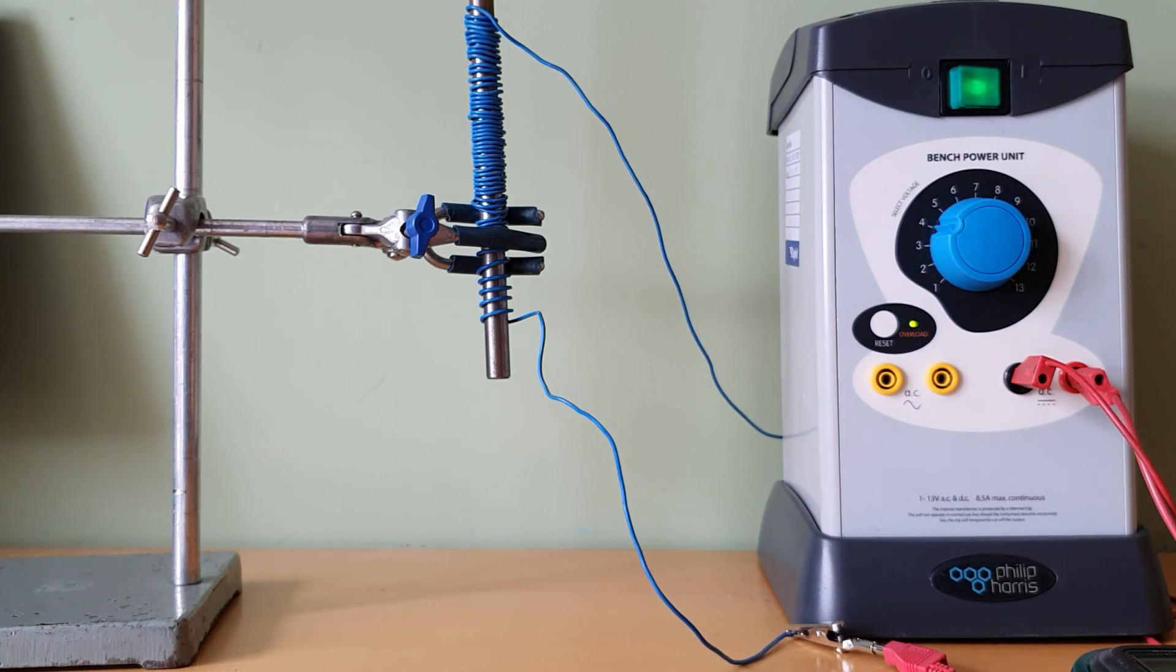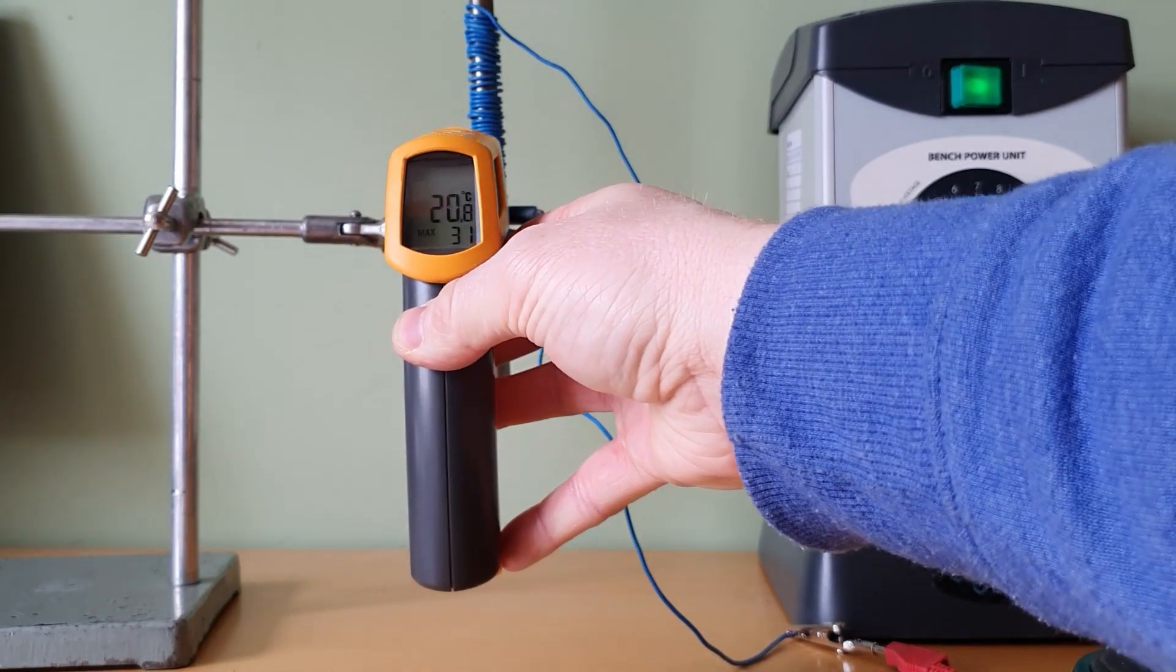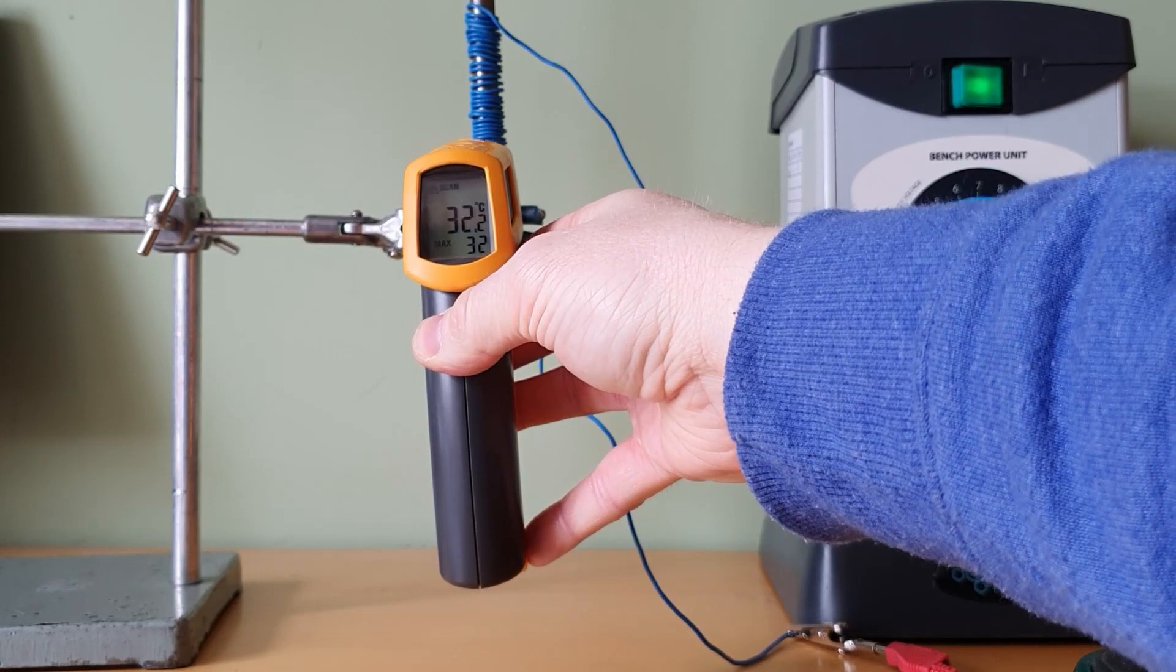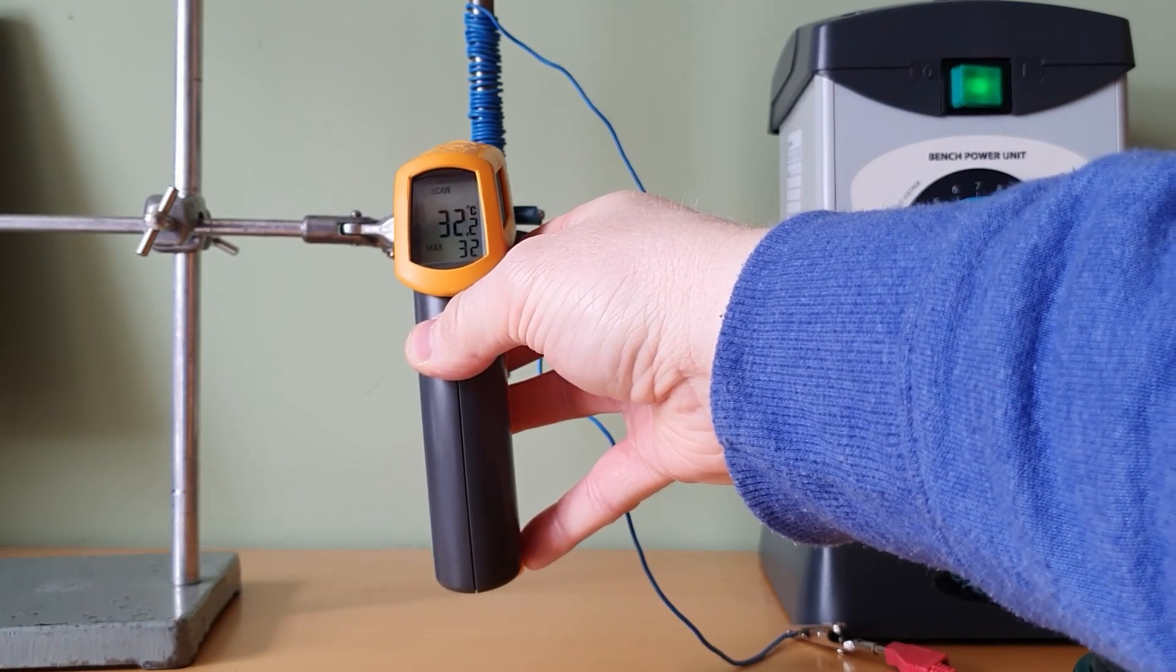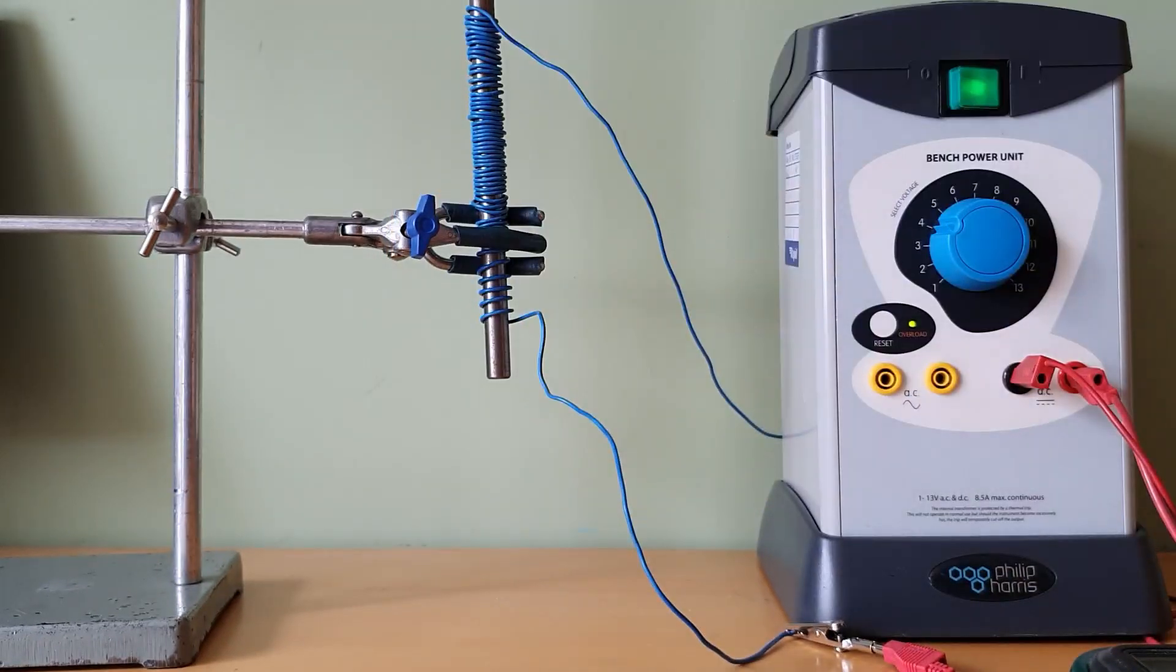So we can clearly see increasing the number of turns dramatically increases the strength of the electromagnet. Just so you can see temperature, remember we had initially measured the temperature of that coil to be about 20 degrees. Currently it's about 32 degrees. So you can see it's heated up quite a bit. And that's with a fairly low current.